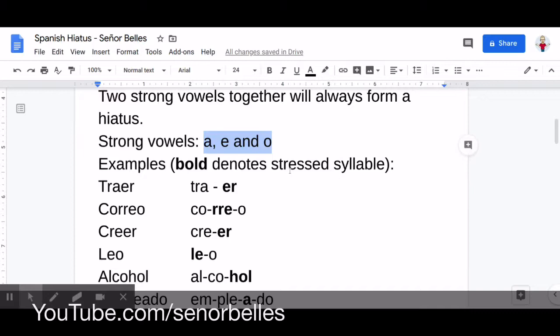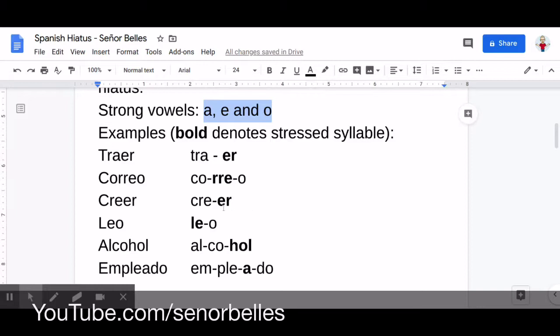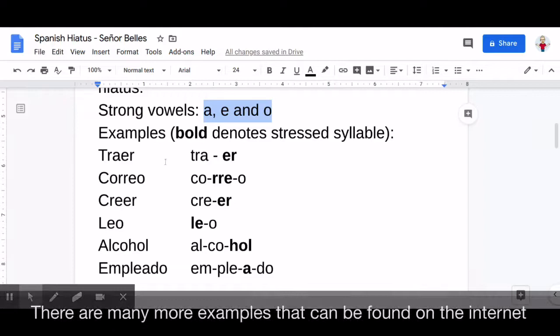So what I've done here is I've given you six different examples, and I'll pronounce the word for you, and then over here on the right, I'll show you how it's broken up. So the first word is traer. So tra and then er are separate syllables, traer.